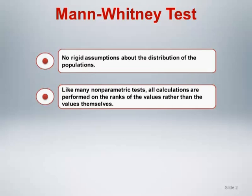Like many non-parametric tests, all calculations are performed on the ranks of the values rather than the values themselves. This has the advantage of reducing the influence of outlying or extreme data values on the calculations, thus making the test and resulting p-value insensitive or robust to outliers.